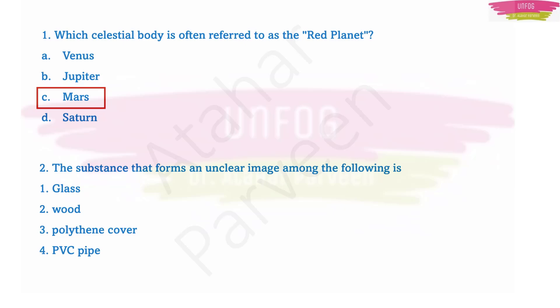Question number two: the substance that forms an unclear image among the following is... Read the options carefully: glass, wood, polythene cover, PVC pipe. PVC pipe means polyvinyl chloride pipe, basically a plastic pipe. See, glass you will get a clear image, wood you will not get any image at all, in PVC pipe also you will not get any image. So for this question, correct answer will be polythene cover because you will get some sort of image but it will not be a clear image.